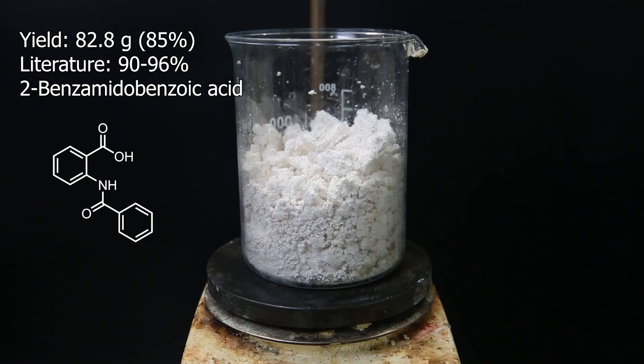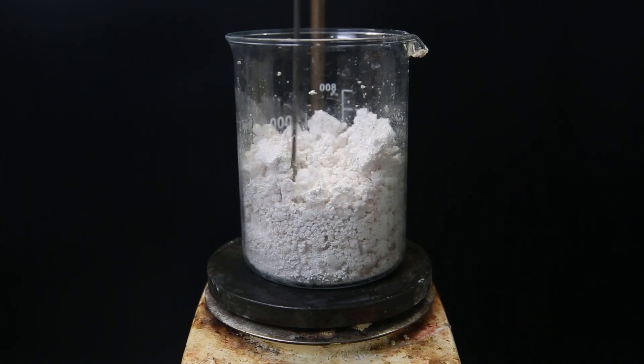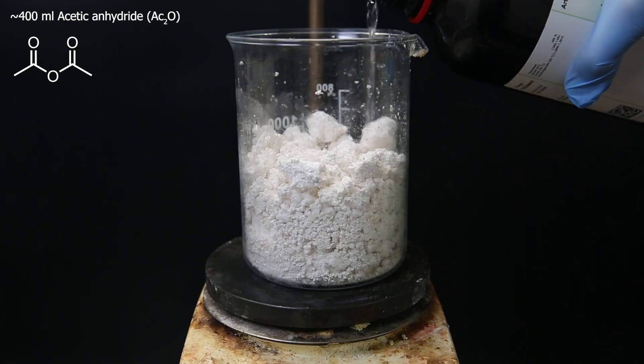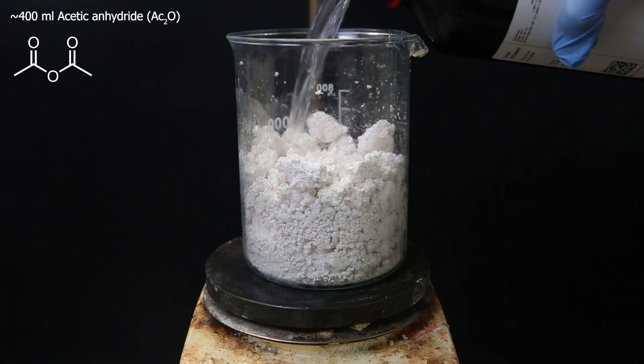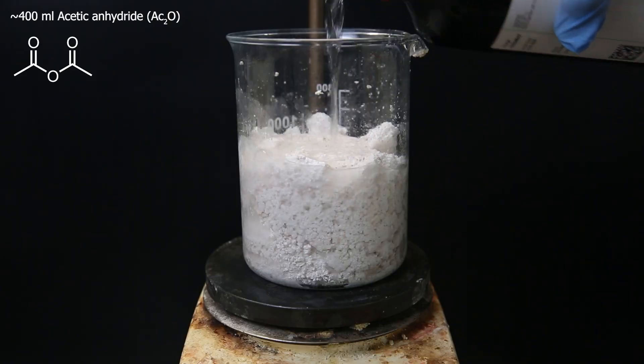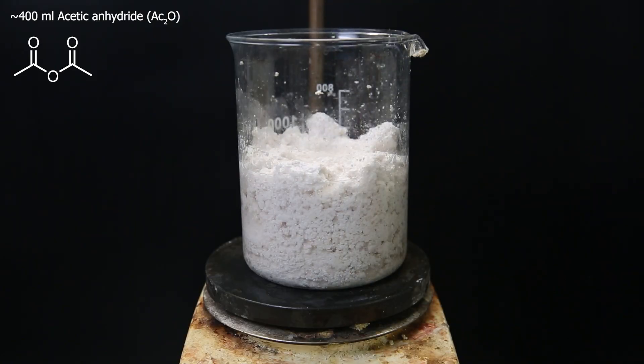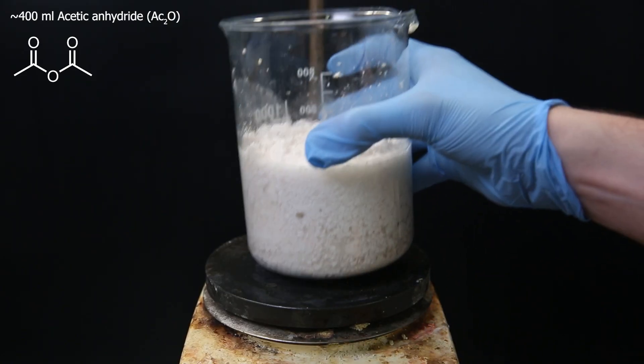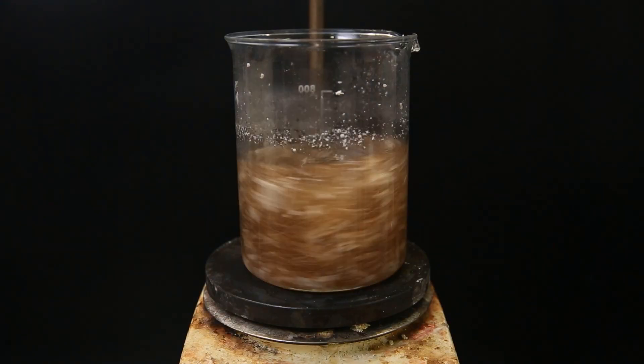Either way, it won't matter for the next reaction if there is still some solvent remaining, so I can just forward it like this. For that reaction, I first have to dissolve all the material in some acetic anhydride, of which I add about 400 ml. Acetic anhydride will react with any remaining water to form acetic acid, and the other solvents will boil off from the generated heat.